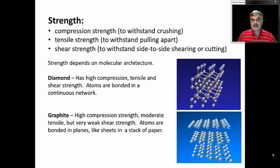Graphite, another form of carbon, has a different molecular architecture. In graphite, the carbon atoms are bonded in a sheet, in a series of sheets that lie on top of one another. And these sheets can slide past each other. Because of that, carbon, while it has a fairly high compressive strength and moderate tensile strength, has a very weak shear strength. That is very easy to cut carbon.